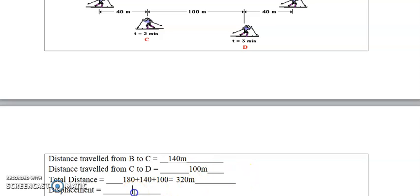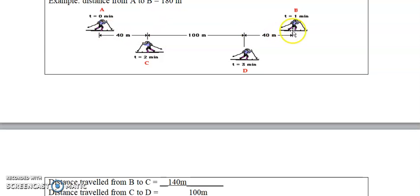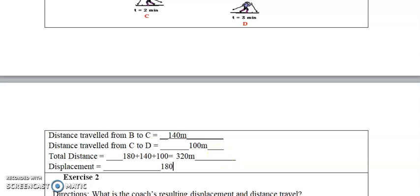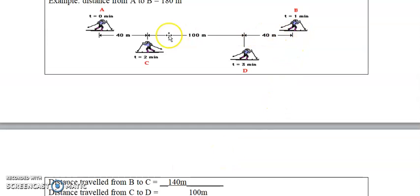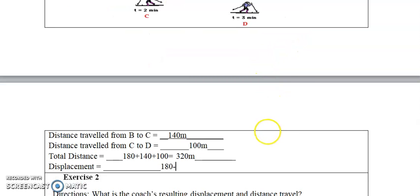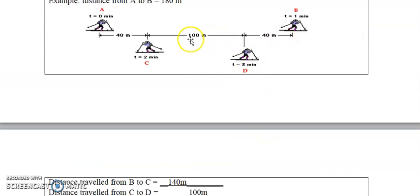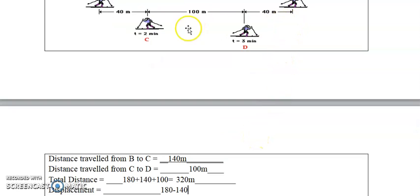So displacement: positive 180 from A to B, then minus 140 from B to C — that's because the path going west from B to C covers 40 plus 100 which equals 140. Then from C to D going to the right — we continue solving the displacement step by step.